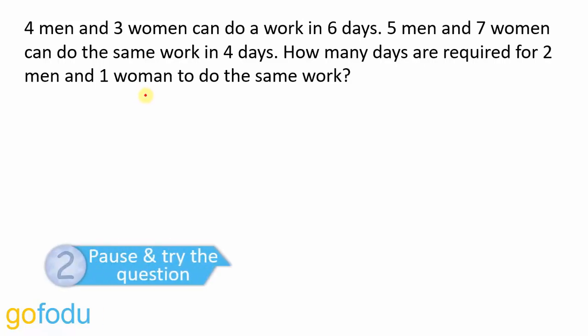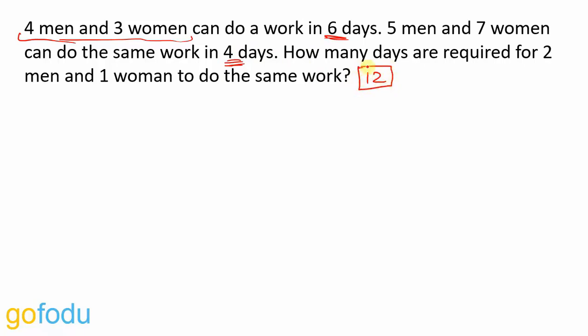Take your time and go through this question. There is a team of four men and three women who can do a work in six days. Then there is another team of five men and seven women who can do the same work in four days. Now there are various ways to solve this question but we'll stick to what we know best that is LCM method. We have six days and four days mentioned. LCM of six and four would be 12 that is our total work.